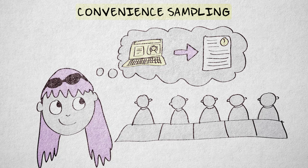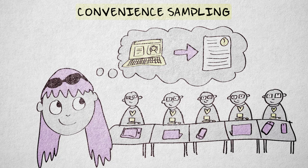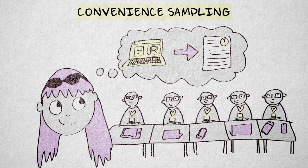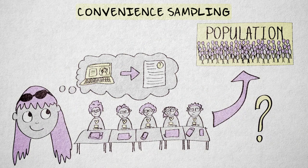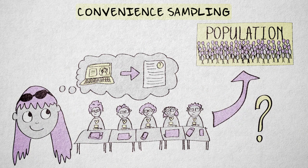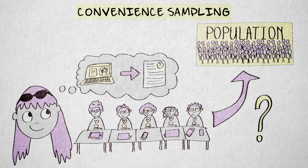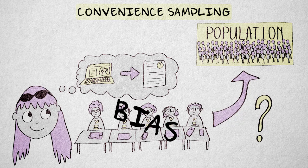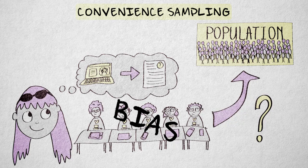Results will almost certainly be influenced by specific characteristics of this group and might very well fail to generalize to all university students in my country, let alone students in other countries. So the risk of bias is high, and we have no way to determine how closely the sample value is likely to approach the population value.